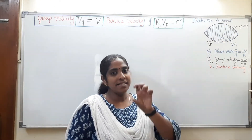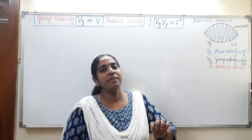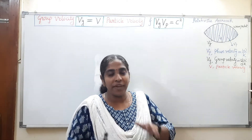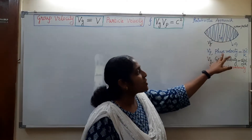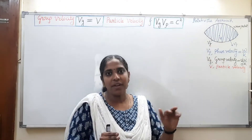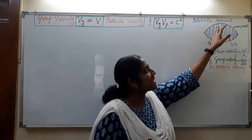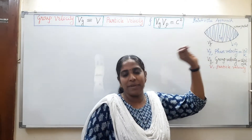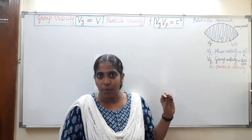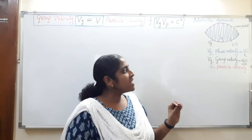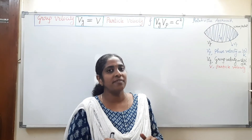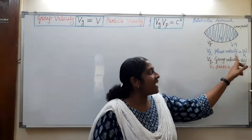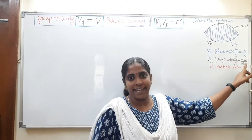Each single wave moves with a particular velocity and has a particular phase; that velocity is known as the phase velocity. So the phase velocity is the velocity of each single wave, and that relationship is omega by k, where omega is the angular frequency and k is the propagation constant. Whereas the group of waves moves with the group velocity vg, which is equal to d omega by dk.